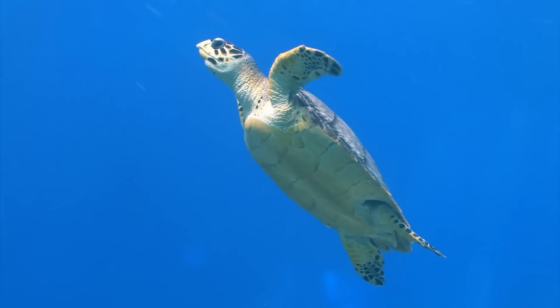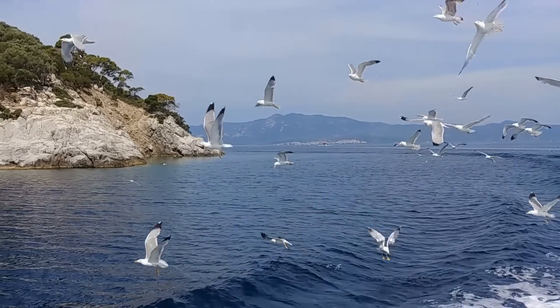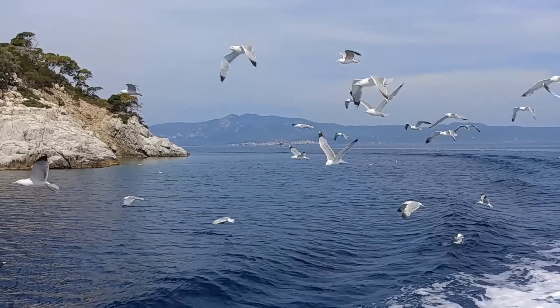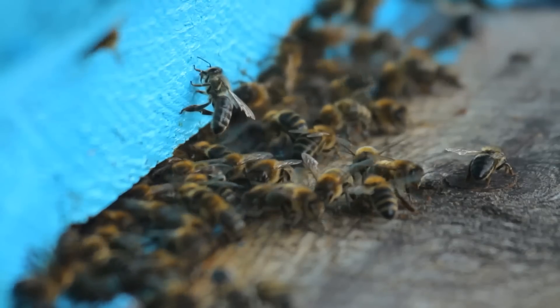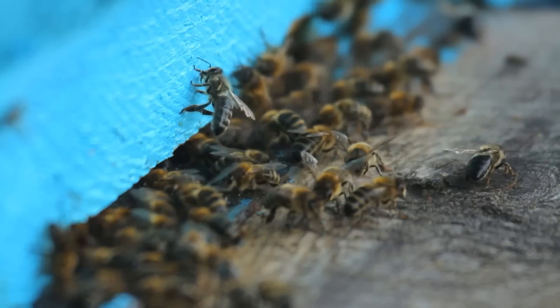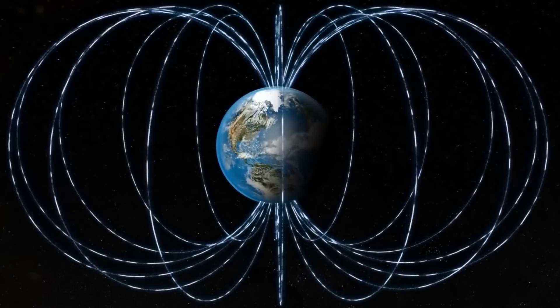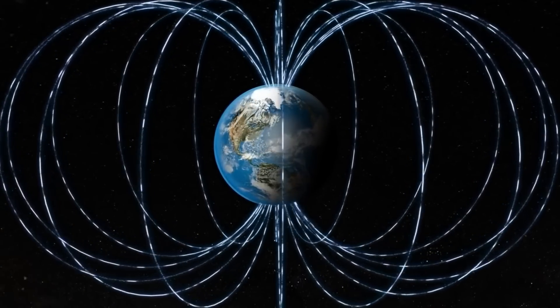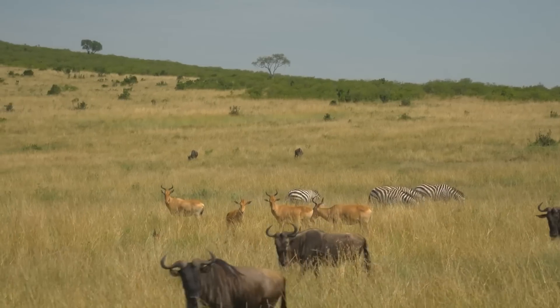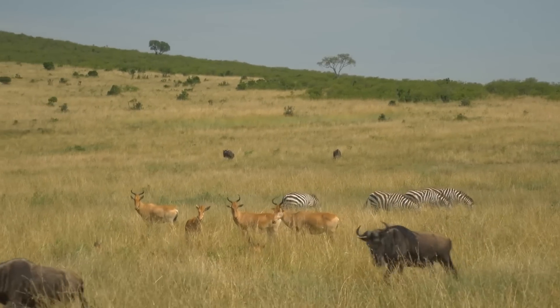For example, sea turtles may get lost at sea, migratory birds may fly off course and put their lives in danger, and honeybees may lose their way in search of their hives, thus affecting the pollination of plants and flowers. So the importance of Earth's magnetic field goes beyond just protecting our atmosphere, but it's also crucial for the survival of various animal species.